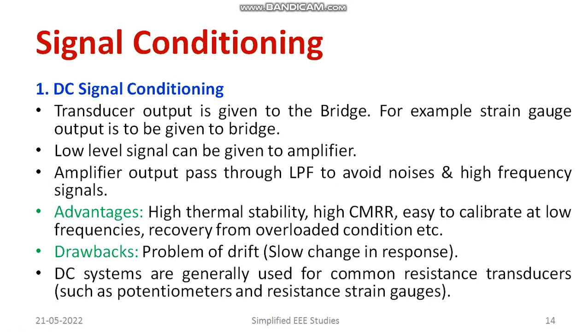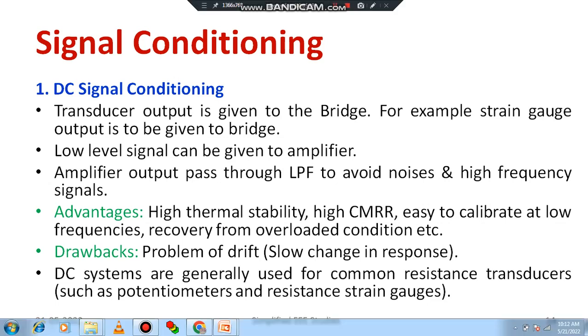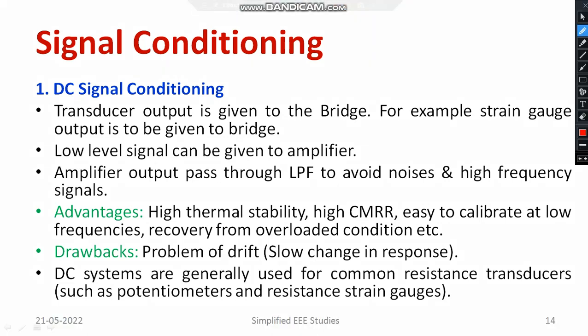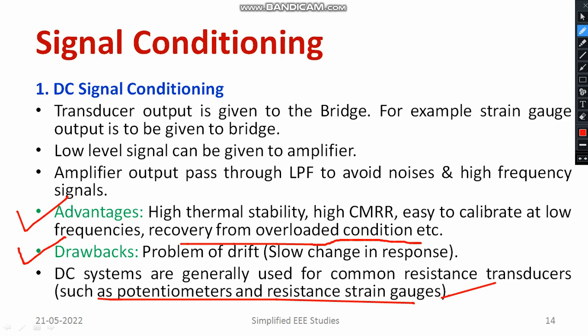On the other hand, DC signal conditioning devices have advantages such as high thermal stability, high common mode rejection ratio (CMRR), and they are easy to calibrate at very low frequencies, with good recovery from overloaded conditions. DC systems are generally used with common resistance transducers such as potentiometers and resistors — specifically, strain gauges and potentiometers can be directly connected to DC signal conditioning devices.